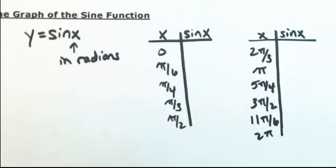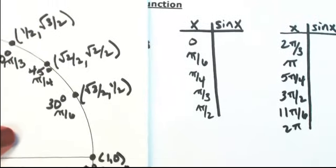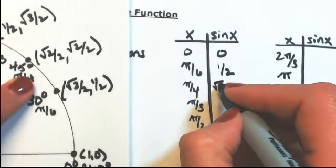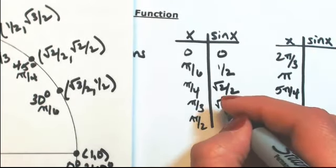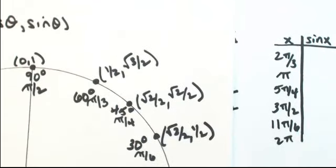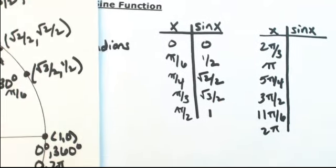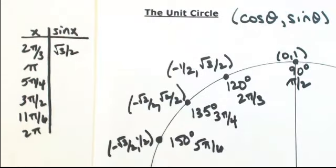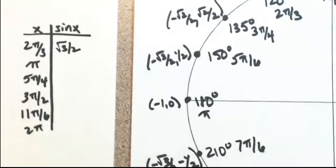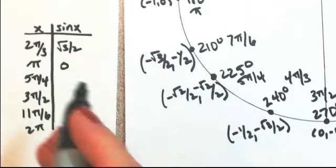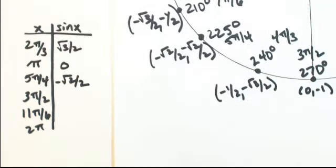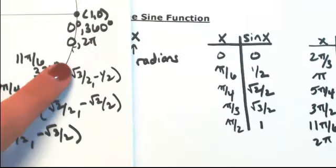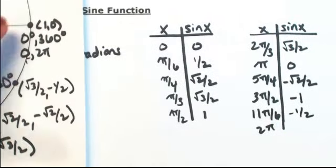Remember that on the unit circle, the y-coordinate is the sine value. So in the first quadrant, let me just grab all those y-coordinates. So at 0, we get 0. Pi over 6, we get 1 half. Pi over 4 is square root of 2 over 2. Pi over 3 is square root of 3 over 2. At the top of the circle, the sine of pi over 2 is 1. At 2 pi over 3, the y-coordinate is square root of 3 over 2. At pi, we get 0. At 5 pi over 4, we get negative square root of 2 over 2. At the bottom of the circle, the sine is negative 1. 11 pi over 6 is negative 1 half. And then back around where we started, we would get 0.